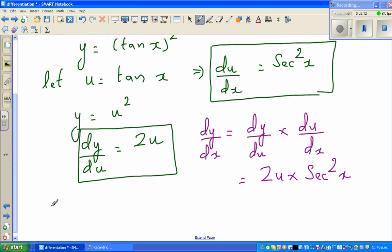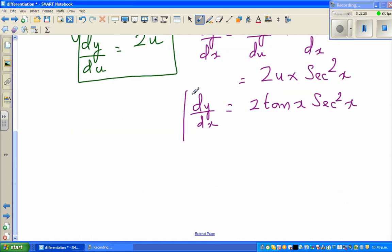So dy by dx equals u, what is u? u is tan x. So this is 2 tan x times sec squared x. This is your answer. Now I always want you to, those of you who can use a graphic calculator, it's good to check your answer on the graphic calculator.